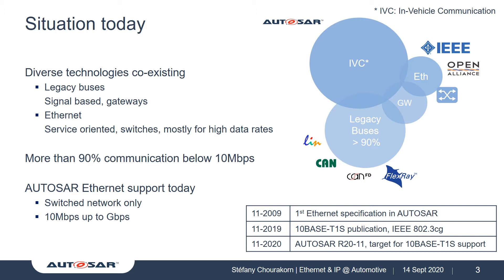Another major actor in the automotive world is AUTOSAR, which standardizes ECU software architectures and supports each of these technologies. While Ethernet is a widely used solution for high data rate communication above 100 megabits, an interesting fact is that more than 90% of communications are actually below 10 megabits. So last year, the IEEE released a new specification for low-cost 10 megabit Ethernet in a bus topology, and its introduction in AUTOSAR is targeted for November 2020.